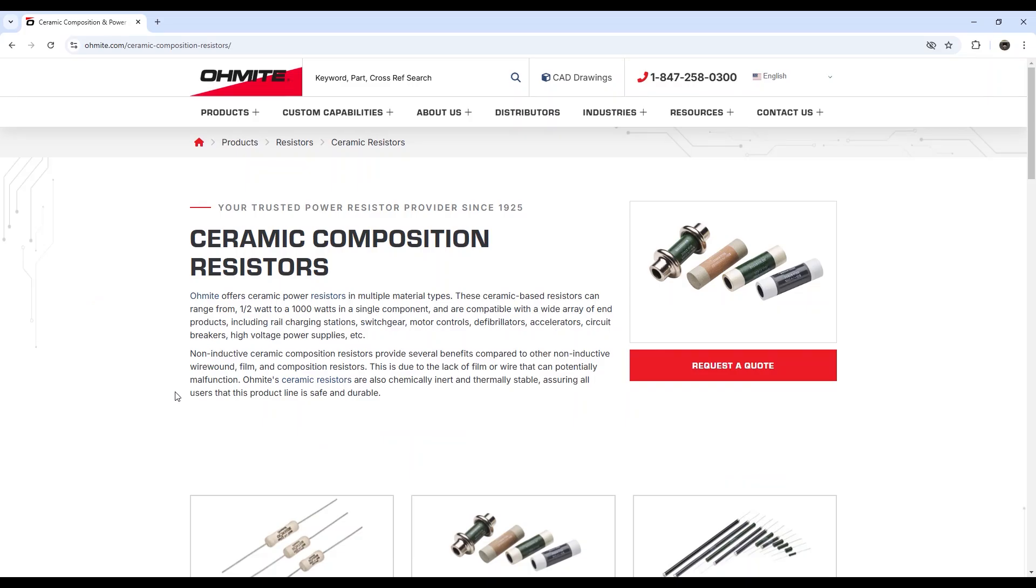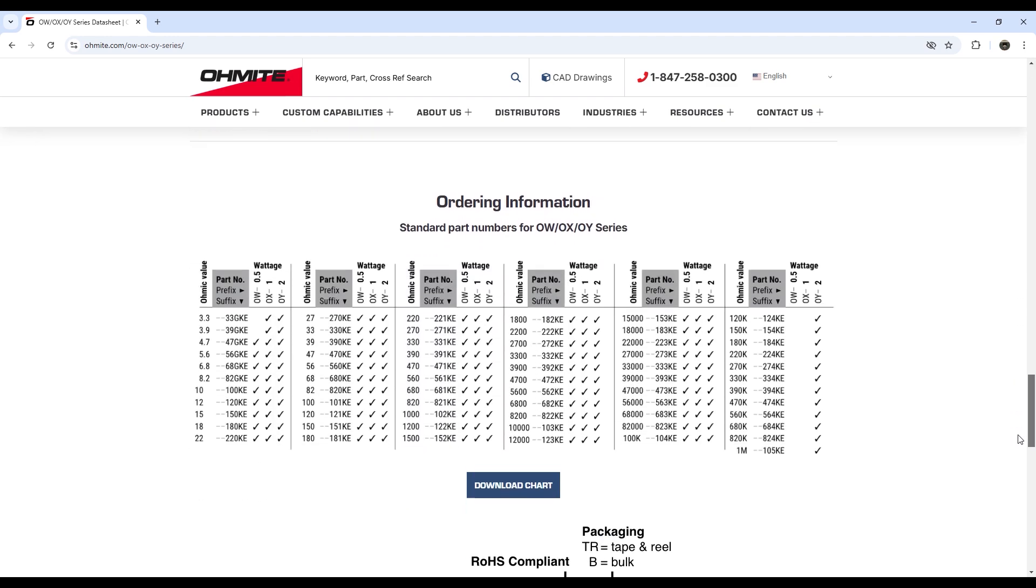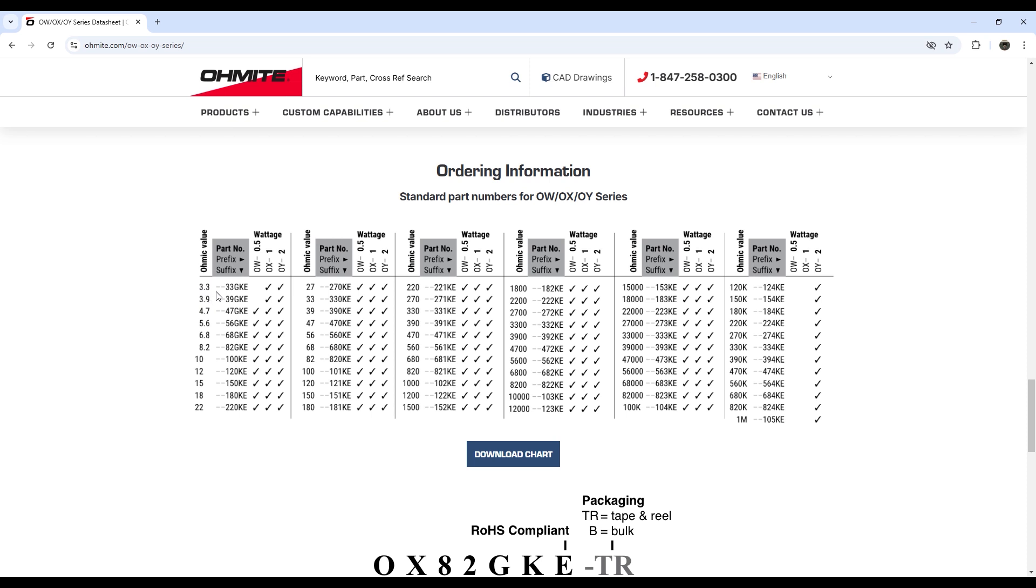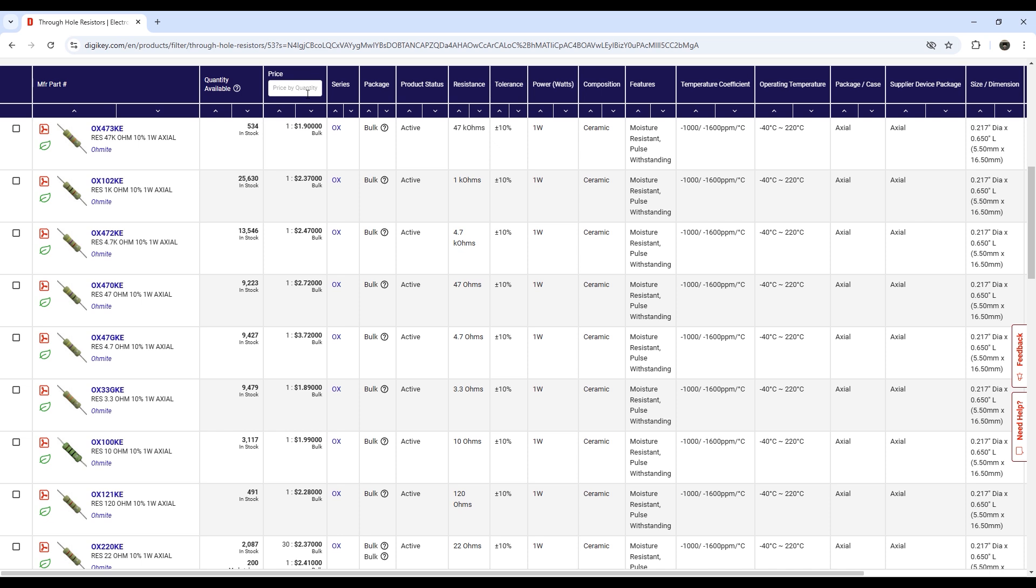The final thing I want to briefly cover in this episode are a few other options for replacing low value carbon comps. Ceramic composition is a good choice because it's also inherently non-inductive. Ohmite in particular makes several models, including their 1W OX series, and those are available in values as low as 3.3 ohms. But be prepared to dig deeper into your wallet though. Those ceramic comps retail between $1 to $3 apiece. Now that's about five times the cost of your typical 1W metal film. And just last year, RCD introduced their new CM series of carbon matrix resistors. They promised backward compatibility with Allen-Bradley carbon comps, including having low inductance properties. However, I wasn't able to find a stocking distributor that carries them and sells them in small quantities.